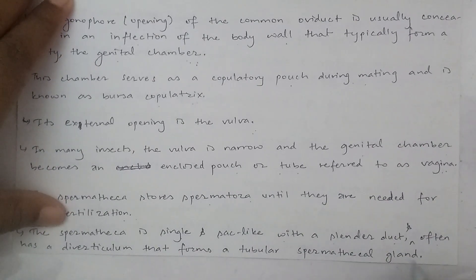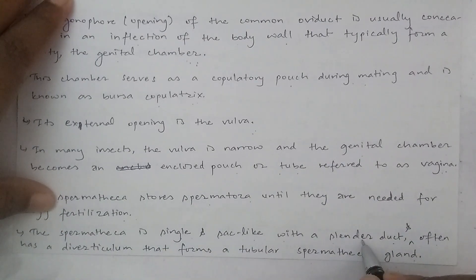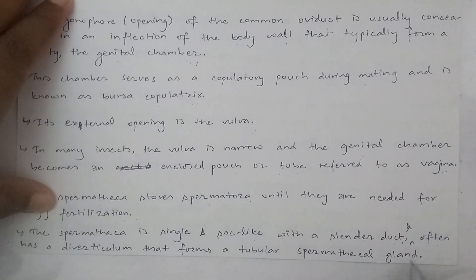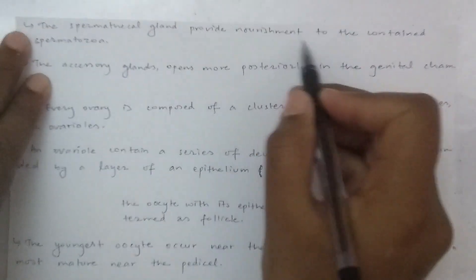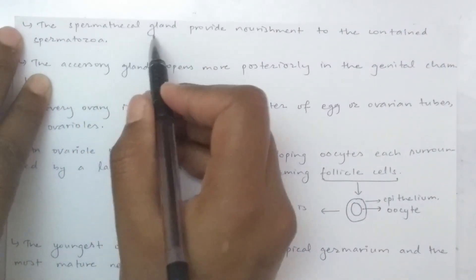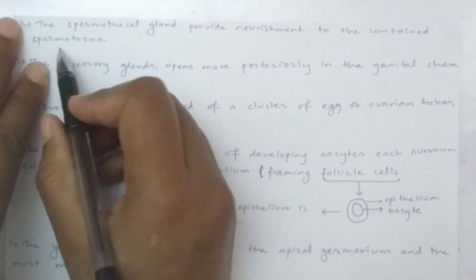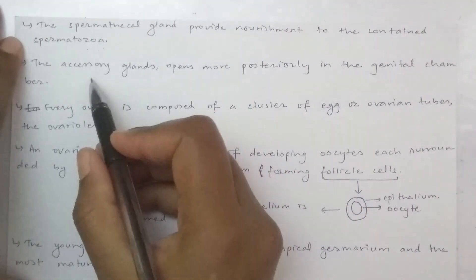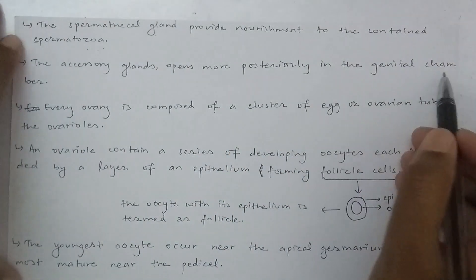The spermathecal gland is single, sac-like, with tubular ducts. The spermathecal gland provides nourishment to the stored spermatozoa. The spermatheca is present to store spermatozoa and provide nourishment. The accessory gland opens more posteriorly into the genital chamber.